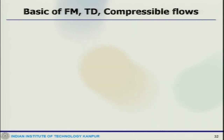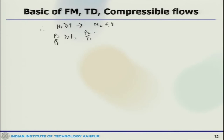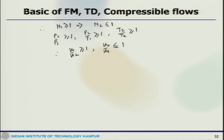Since M₁ ≥ 1, M₂ must be ≤ 1. Therefore: ρ₂/ρ₁ ≥ 1, p₂/p₁ ≥ 1, T₂/T₁ ≥ 1, and u₁/u₂ ≥ 1, meaning u₂/u₁ ≤ 1. This clearly means pressure, density, and temperature all increase across the shock wave, while velocity and Mach number decrease across the shock wave.